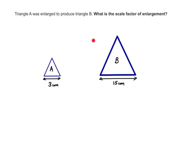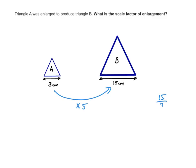Sometimes you may be asked not to enlarge a shape — the enlargement will already be given to you, and they will ask you to work out the scale factor of enlargement. In other words, what did we multiply by to enlarge the original shape? Here, triangle A was enlarged to produce triangle B. All you need to do is compare the corresponding sides. The base of triangle A is 3, and in the enlargement the base is 15. From 3 to 15, the multiplier is clearly 5, because 15 divided by 3 is 5. So the scale factor of enlargement is 5.